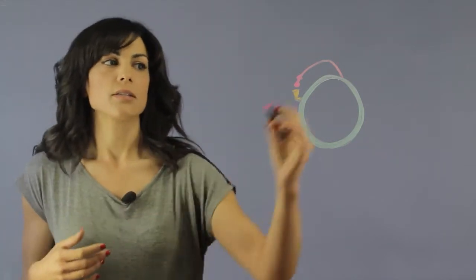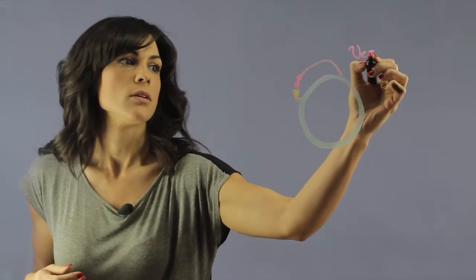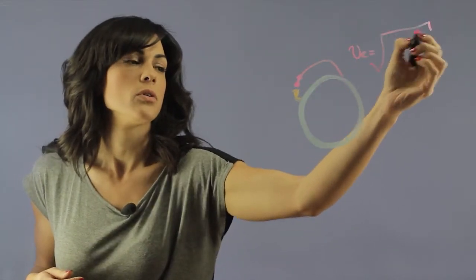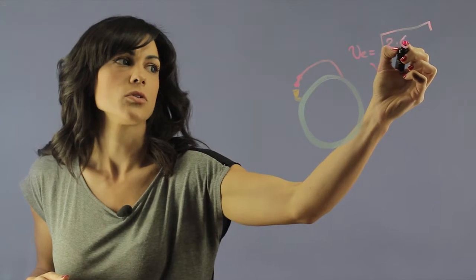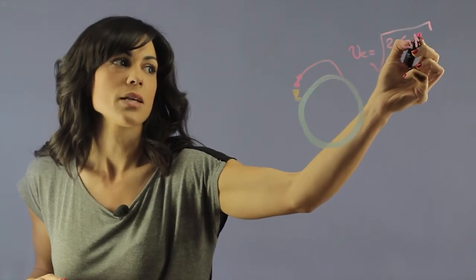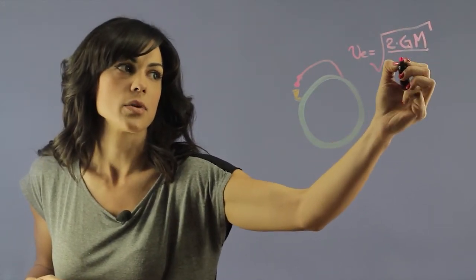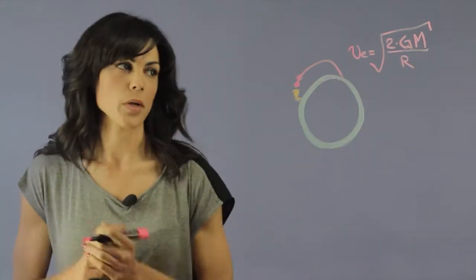This escape velocity is described as the square root of two times the gravitational constant G, the mass of the planet, divided by the radius or the distance to where you want to go.